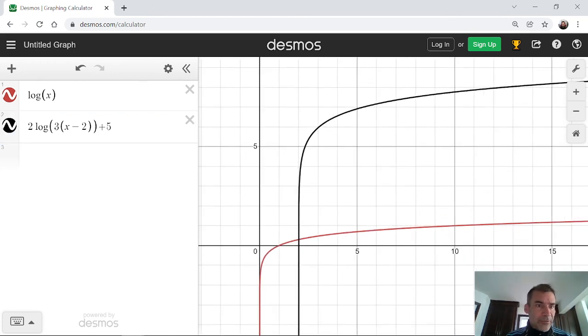This is 5 units higher plus stretch vertically by a factor of 2. 2 units to the right, horizontally compressed by a factor of 3.